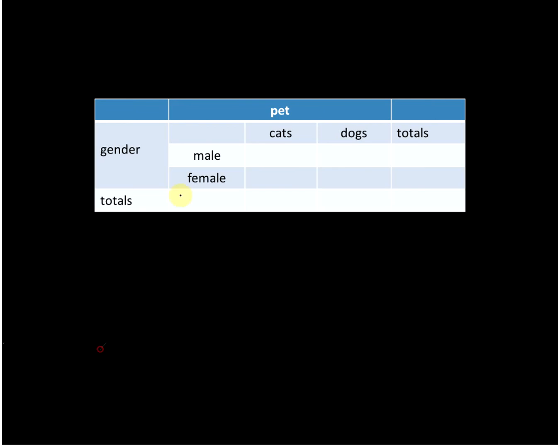A contingency table is made up of rows and columns. Here we just simply put in our numbers. We said we had nine males who like cats, nine males who like dogs, 41 women who like cats, and 41 women who like dogs.